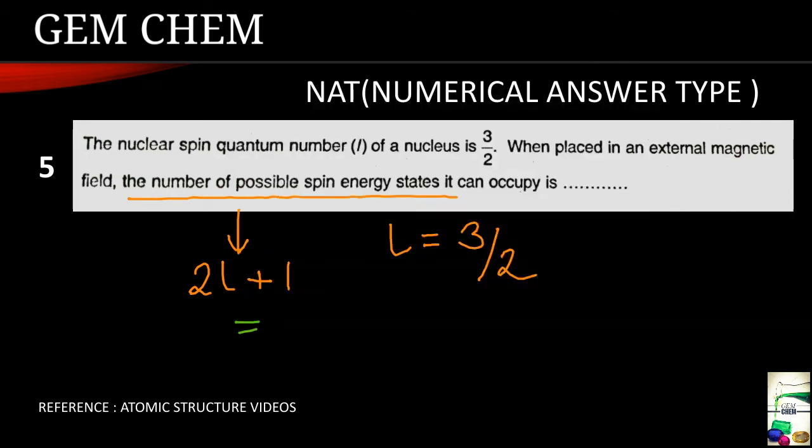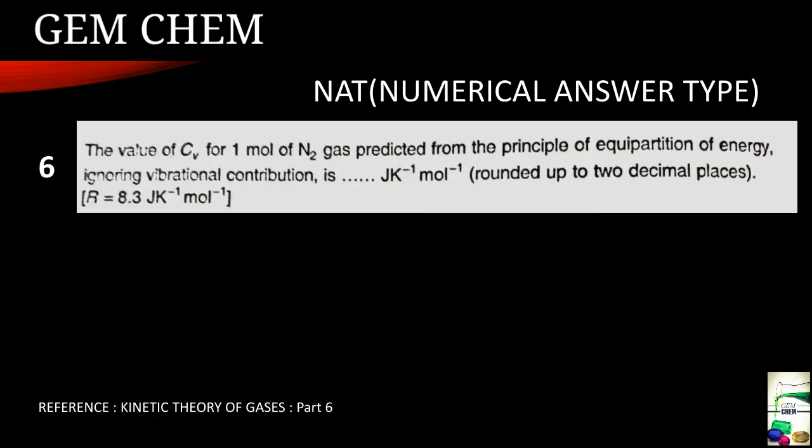So our answer is 2 into 3 by 2 plus 1 comes to be as 4. So our answer here is 4. Now we will go for the next, that is NAT type question.